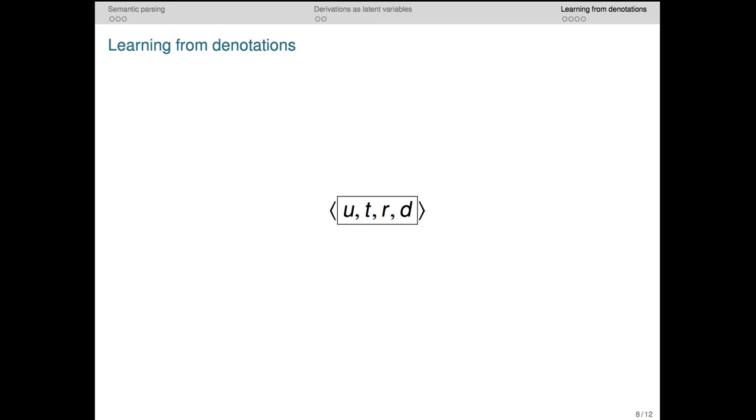The preceding brief interlude into derivational ambiguity and latent variable objectives sets the stage well for addressing the problem of trying to learn from denotations directly. In this problem we really take on the entire grammar in the sense that we try to learn the full pairing of utterances u or syntactic structures t with their denotations d as mediated by the logical form representation r.